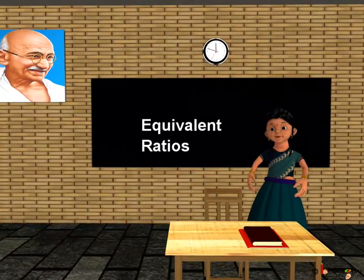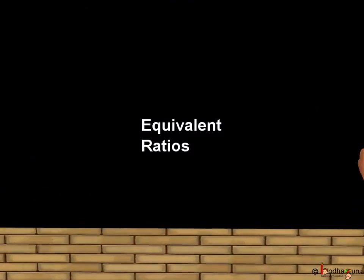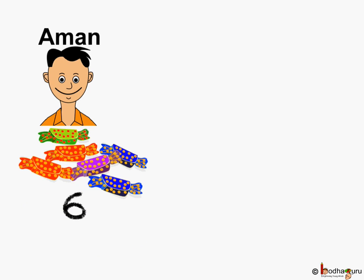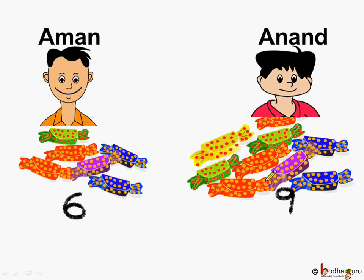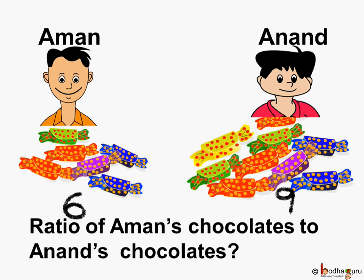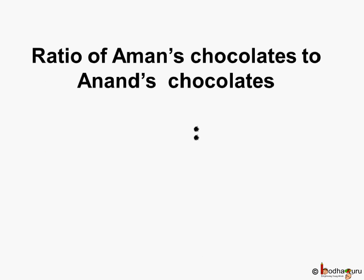Good morning children. Today we shall learn about equivalent ratios. Now this is Aman and he has 6 chocolates. And this is Anand, his friend, and he has 9 chocolates. Can you find what is the ratio of Aman's chocolate to Anand's chocolate? The ratio of Aman's chocolate to Anand's chocolate is 6 is to 9.